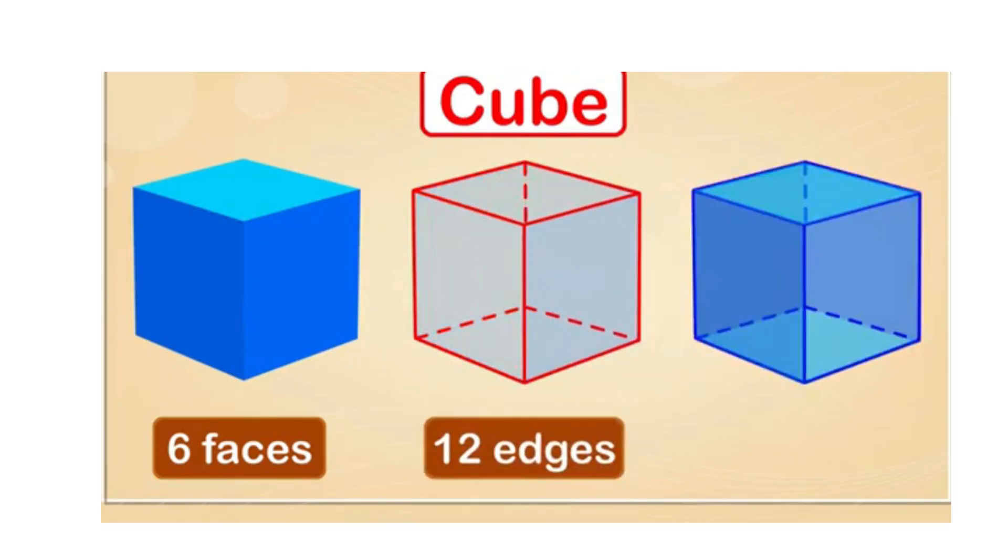Let's find out the number of vertices it has. 1, 2, 3, 4, 5, 6, 7, 8. There are 8 vertices here.